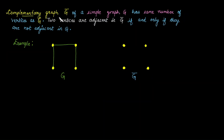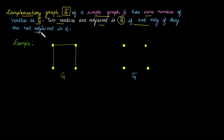Next is the complementary graph of a simple graph G, represented as G-bar. It has the same number of vertices as graph G. Two vertices are adjacent in G-bar if and only if they are not adjacent in graph G. For example, given graph G, we need to construct its complementary graph G-bar. First we observe that there are four vertices.